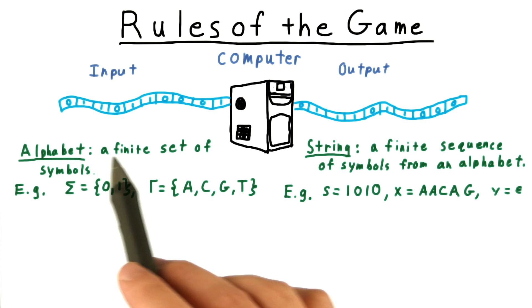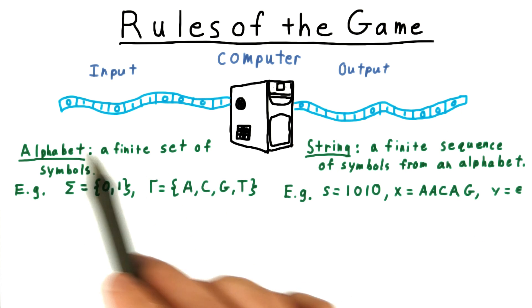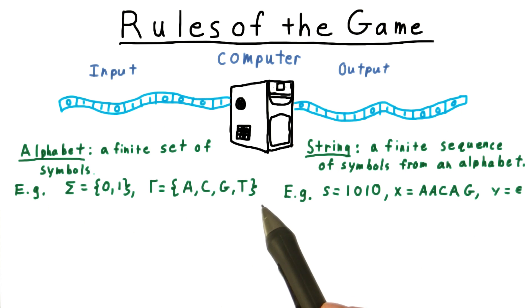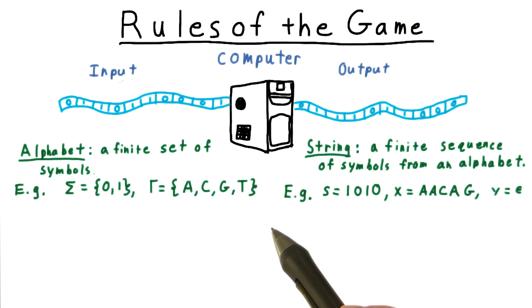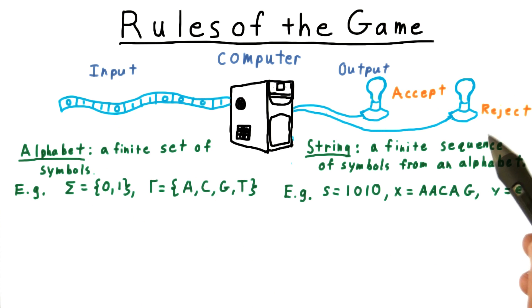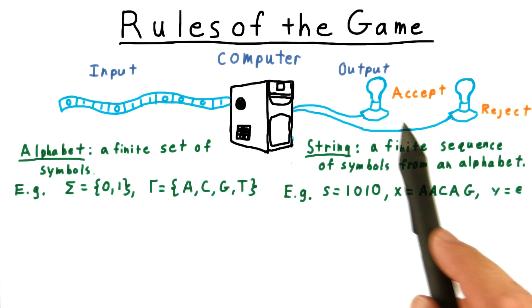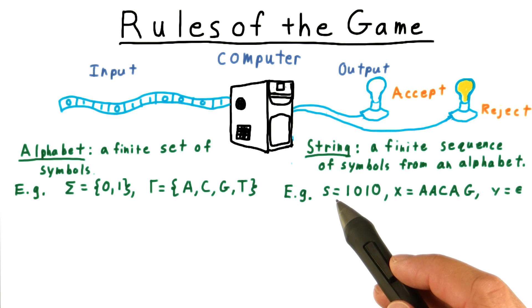Sometimes we will talk about machines having string outputs, just like the inputs. But more often than not, the output will just be binary, an up or down decision about some property of the input. So we might think about the machine as just turning on one of two lights, either one for accept or one for reject, once the machine is finished computing.